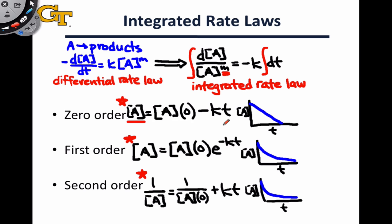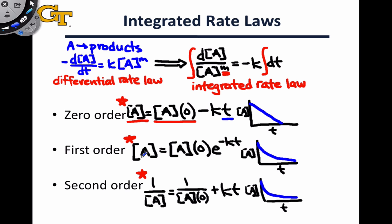These three equations are the integrated rate laws for zero, first, and second-order processes, and their utility really comes in the manipulation of the concentration of A, the initial concentration, and the time. If we know the initial concentration and the time elapsed, we can calculate the concentration at that future time point. We can also use the integrated rate law fit to experimental data to determine the order of reaction and identify the value of k by looking at the slope of the graph, or after a linearization procedure.